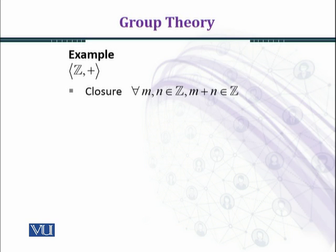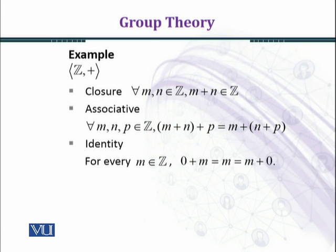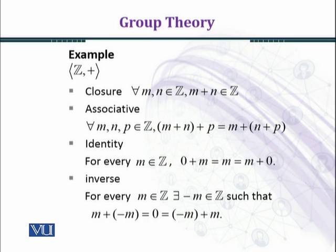Therefore, the closure property is satisfied. Just as we saw that real numbers are associative, every integer is a real number, so the associative property also holds in the case of integers. Zero is the identity element in the set of integers, and we have 0 plus M equal to M equal to M plus 0 for every M in Z.